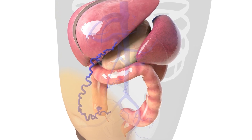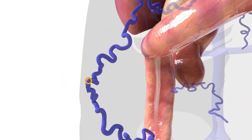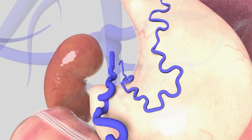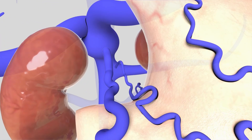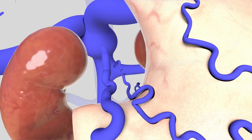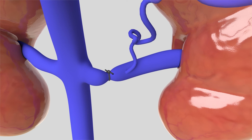During the procedure, each shunt is carefully closed. The closure of these shunts allows the normal flow of blood to be restored.